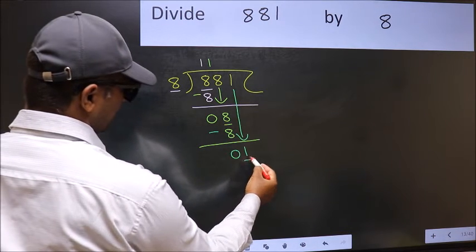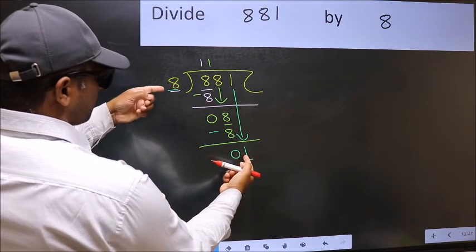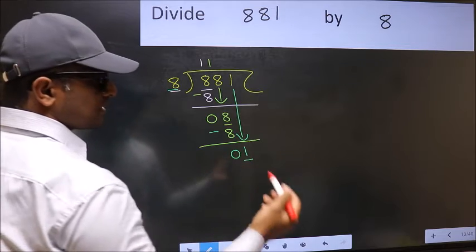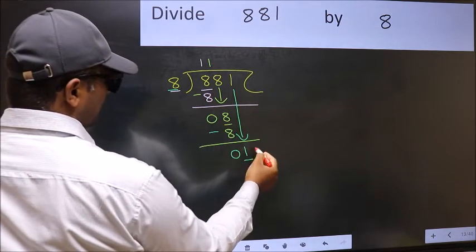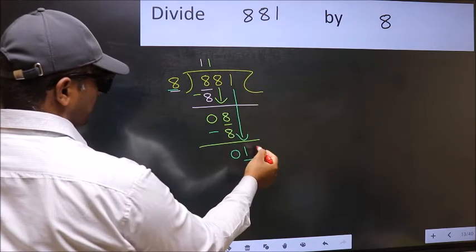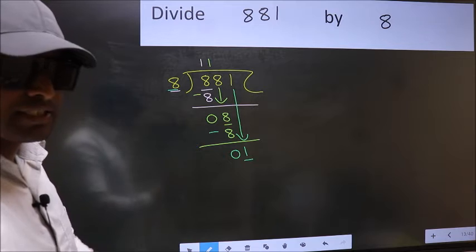Here we have 1 and here 8. 1 is smaller than 8. So what many do is they directly put dot and take 0. Which is wrong.